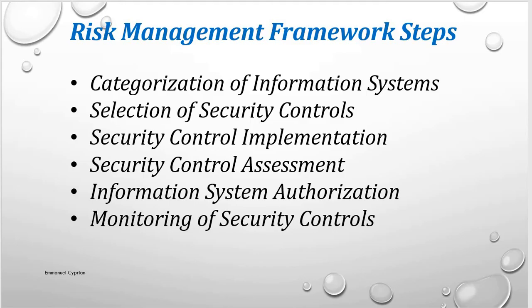The fifth step is information system authorization, which means the system is hereby authorized to operate. After the controls have been assessed, the next step is to authorize the system. The authorizing officer deems it fit to say the risk associated with this information system is within the risk threshold, accepting that the controls implemented are enough to reduce the risk. The authorizing officer also accepts the residual risk and issues an ATO — authorization to operate.